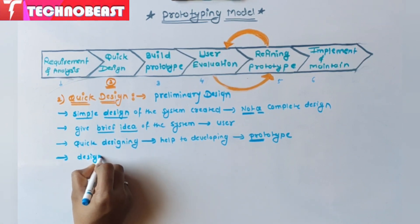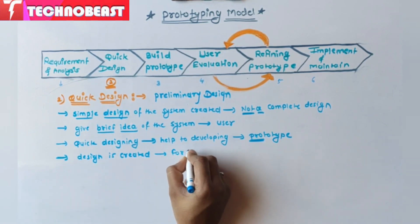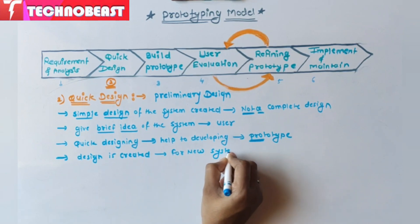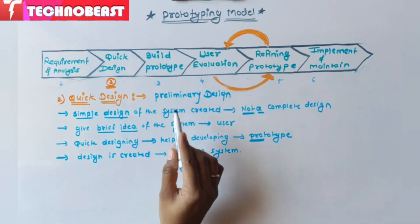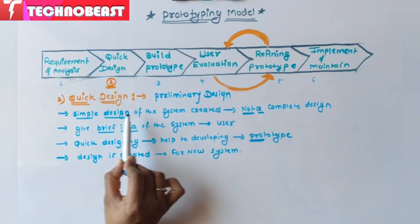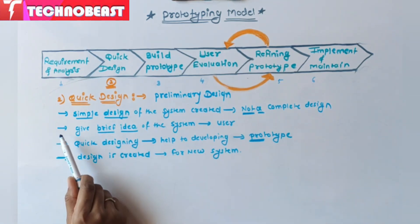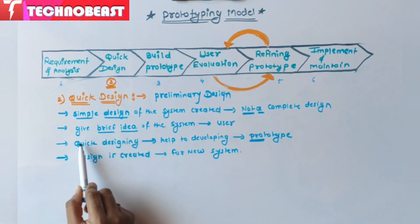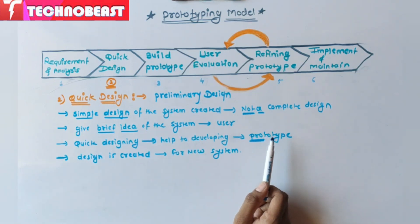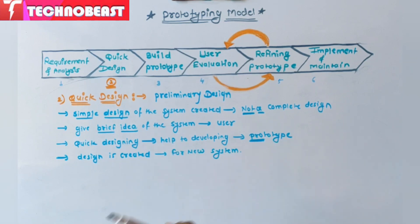A first round of quick designing is created in this stage for the new system. Quick designing, also called preliminary designing, creates a simple design that is not a complete design. It gives a brief idea of the system to the user. With the help of this quick designing, they develop the prototype. First, they create a design for the stage that will be for the new system.